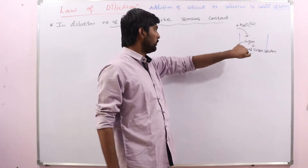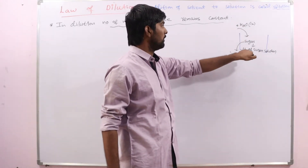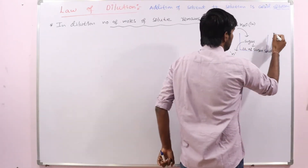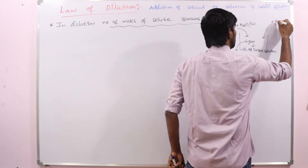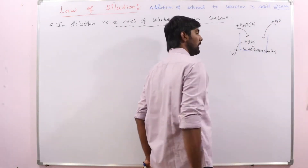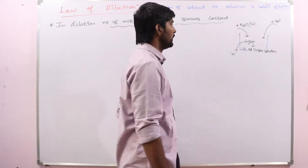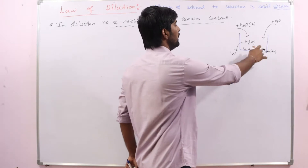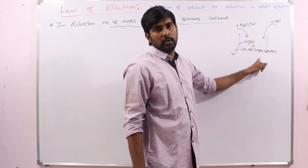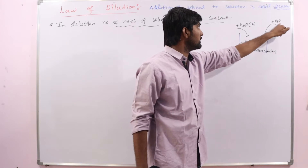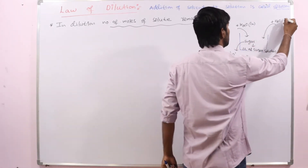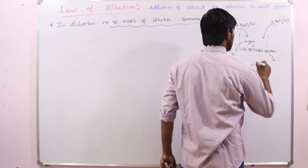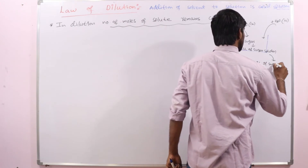For the sugar — n moles of sugar — we have added 1 litre of water, and now 1 litre of sugar solution is formed. For this, we are now adding some extra amount of water, because here water is solvent and sugar is solute. After adding extra amount of water, this solution is diluted. Suppose we are adding 1 more litre. So this 1 litre of sugar solution becomes 2 litres of sugar solution.